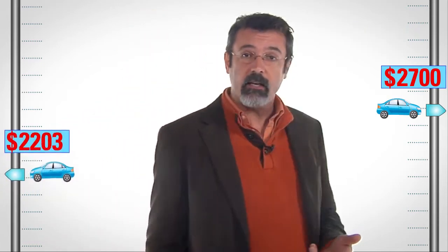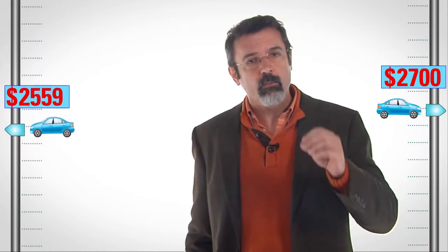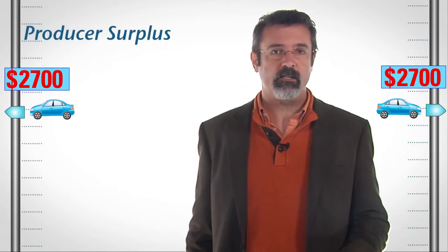Your friend, on the other hand, has received $700 more than the minimum he was willing to accept. We say that he has a producer surplus of $700.